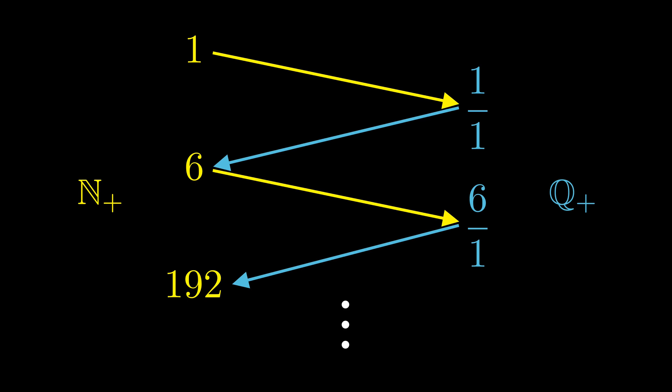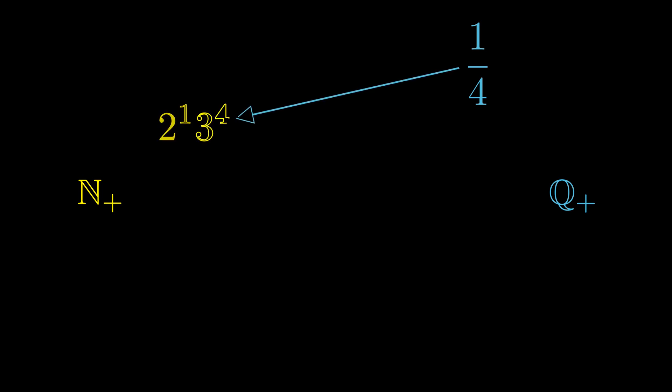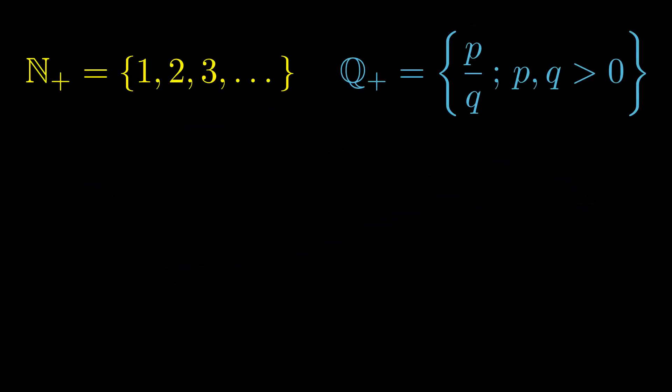On the other hand, we've also got some chains that start on the right. In fact, a fraction like 1 fourth will have no arrow going into it. It'll map to 2 to the 1st times 3 to the 4th, which is 162. That maps to 162 over 1, which maps to 2 to the 162 times 3 to the 1st, a number with over 100 digits. Since the chain starts on the right, we need to take the blue arrows in order to match up the items without leaving any out. In fact, every fraction, which isn't just something over 1, will be the start of its own chain. You can also prove that there are no loops or two-way infinite chains in this example. But in the end, we can piece together these unrelated injections into a bijection between the two sets.